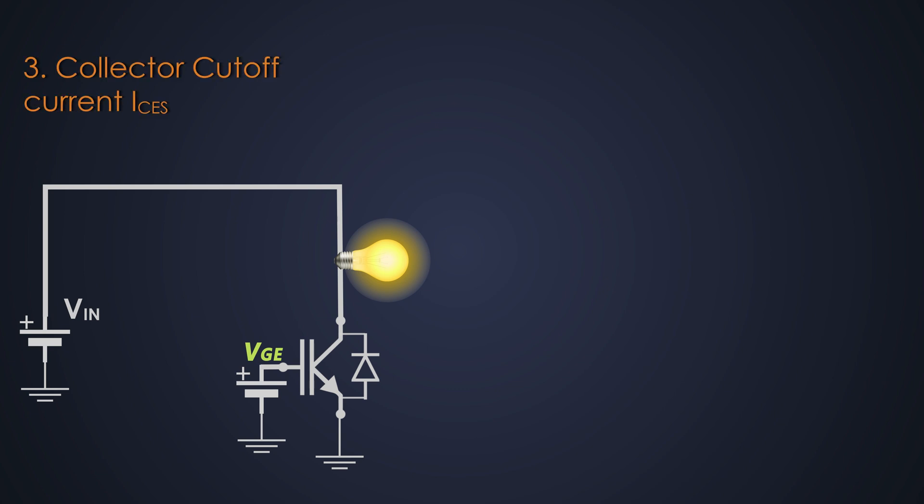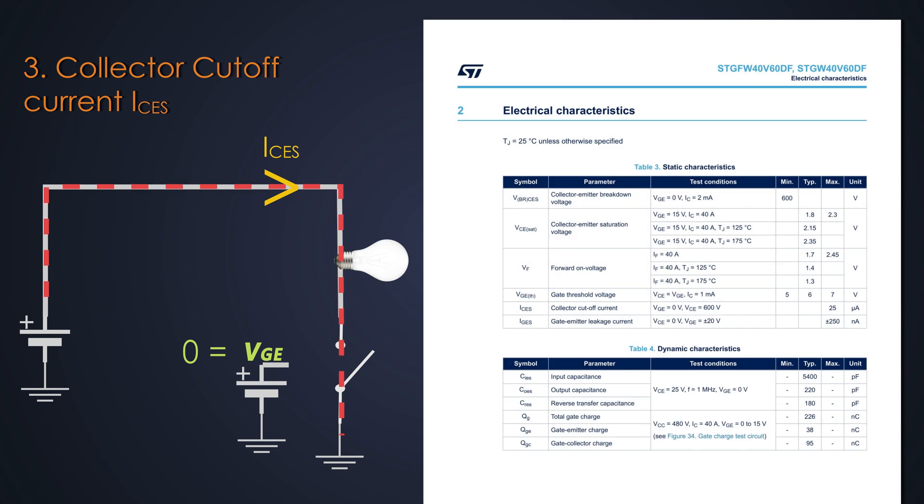Next, coming up is the collector cutoff current. This is also a collector to emitter current, but when gate-emitter voltage is 0V, that means the IGBT is turned off. This is the leakage current. Even if we don't give any gate voltage signal to the IGBT, this fellow allowed some small amount of current to flow through it. This leakage current should be as small as possible. For this IGBT, it is typically 25 microamperes with different VCE and junction temperature conditions. So this leakage current depends on the collector to emitter voltage and junction temperature.